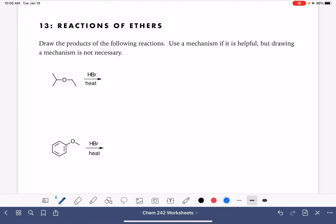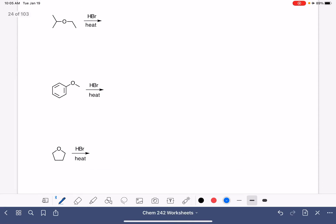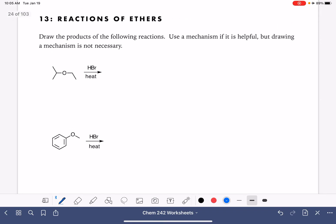On this worksheet, we're going to do three examples of the acidic cleavage of an ether. In all three of these problems, I'm using HBr as the acid, but you could also use HI. So we'll make a note of that. Either HBr or HI with heat for this reaction.